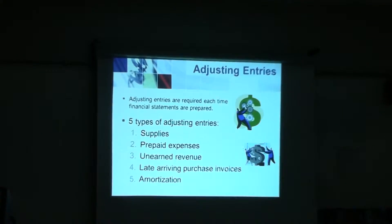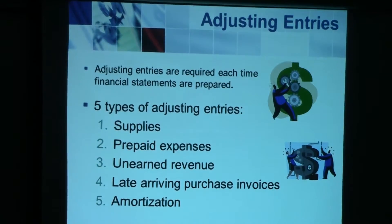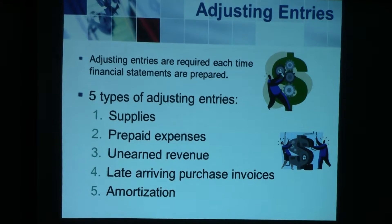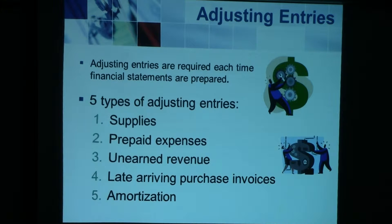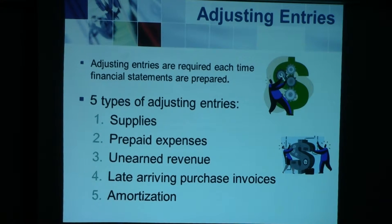Now let's talk about the adjusting entries we'll cover in this chapter. There are five types of adjusting entries based on the types of accounts affected: number one, supplies; number two, prepaid expenses; number three, unearned revenue; number four, late arriving purchase invoices; and number five, amortization. Some of this terminology will be brand new, but I'd like you to understand all these things fairly easily and quickly.